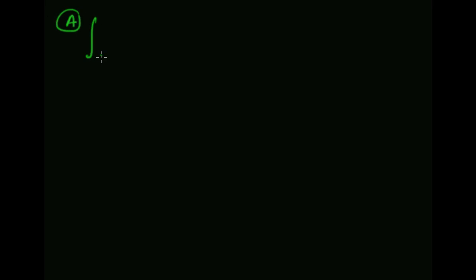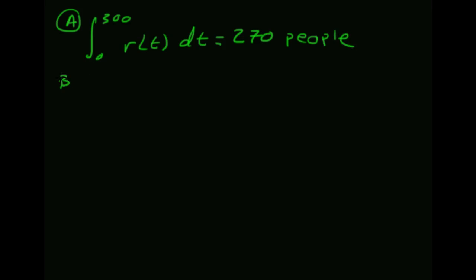We're looking at set five, problem one. We have a piecewise function that breaks over 300 — that is the rate at which people are entering an escalator. They're leaving at a constant rate of 0.7 people per second, and at the beginning there are 20 people in line. Part a: how many people enter the line during the first 300 seconds? That's the integral from zero to 300 of r(t) dt, which works out to be 270 people.